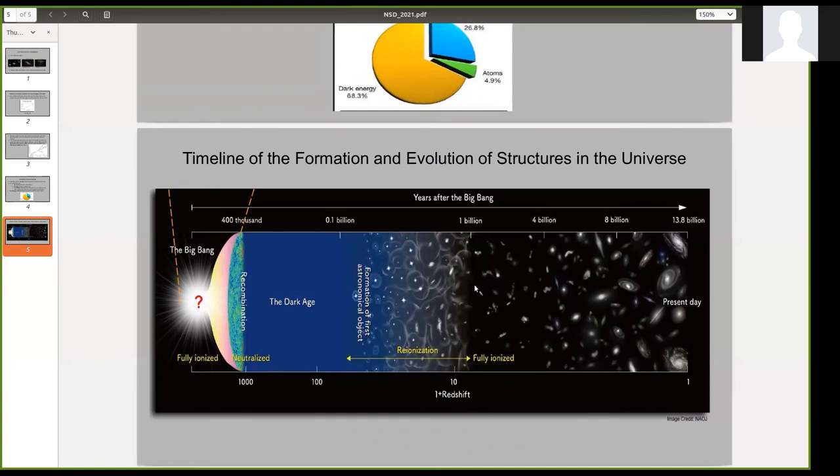And since then, various astrophysical processes have been going on which have resulted in several stars and galaxies and other objects that we see today.